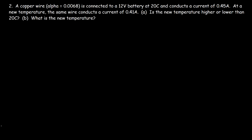Problem 2: A copper wire is connected to a 12-volt battery at 20 degrees Celsius and conducts a current of 0.45 amps. At a new temperature, the same wire conducts a current of 0.41 amps. Is the new temperature higher or lower than 20 degrees? The current decreased, meaning the wire is less conductive and its resistance is greater. The resistance of metals increases only if temperature increases, so the new temperature is higher than 20 degrees Celsius.